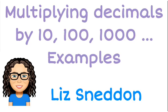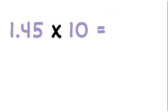Let's have a look at what happens when we multiply decimals by 10, 100, 1000—any factor of 10. So the rule is: look at how many zeros there are in the number that you're multiplying. So 10, 100, 10,000, etc. Look at how many zeros there are.